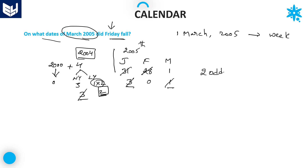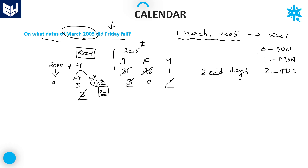The number of odd days for 1st March 2005 is 2 odd days. We know that 0 equals Sunday, 1 equals Monday, and 2 equals Tuesday. So March 1st falls on Tuesday.